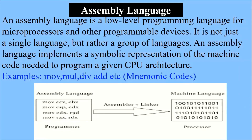In assembly language, these symbolic representations are called mnemonic codes. Mnemonic codes are in between English-like words and machine code — normally understandable. For example, 'MOV' for move data, 'MUL' for multiply, 'DIV' for divide, 'ADD' for addition. These are called mnemonic codes used in assembly language.